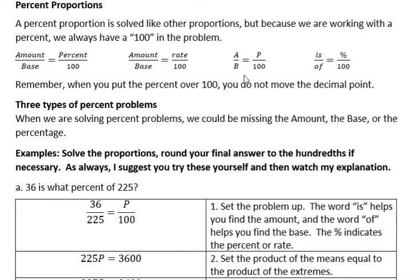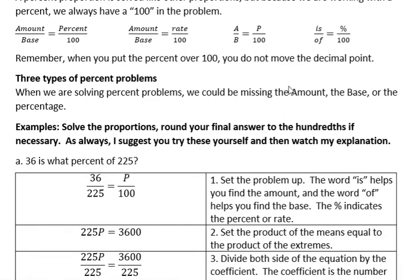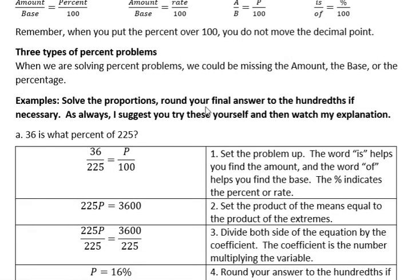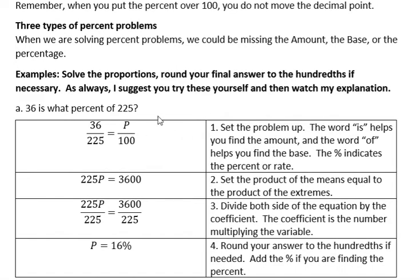We say there are three types of percent problems because you could be missing the amount, the base, or the percent. Any one of those could be missing, which gives us three types of problems. In these examples, round to the hundredths if necessary. As you solve these proportions, I always suggest you try them on your own, then watch my explanation.